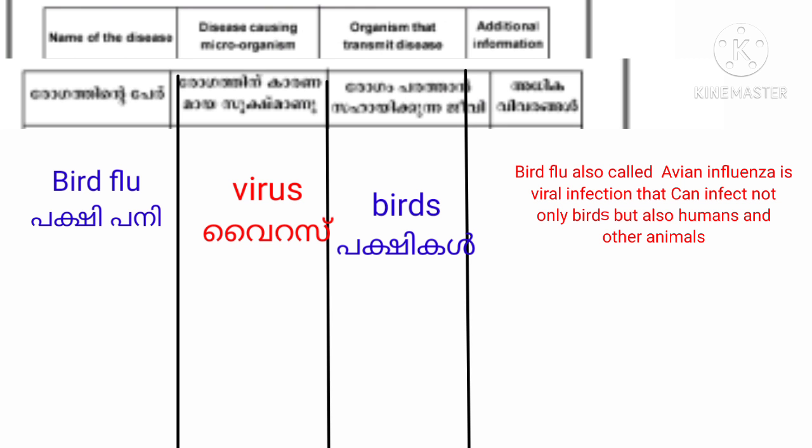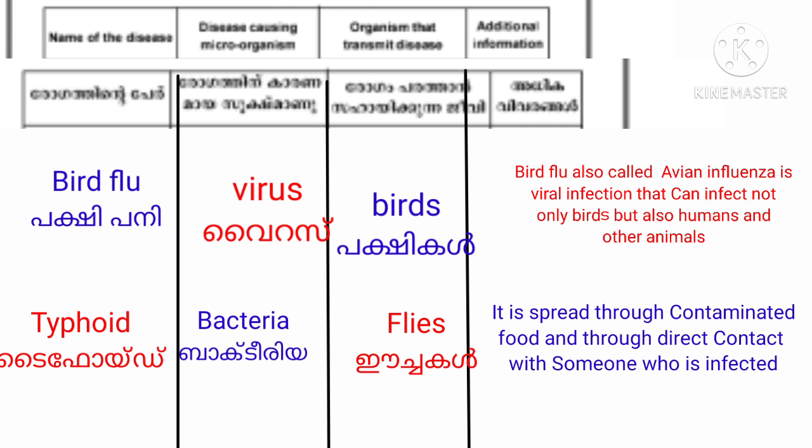The next disease is Typhoid. The disease-causing microorganism is Bacteria. The organism that transmits the disease is Fly. Additional information: it is spread through contaminated food and through direct contact with someone who is infected.